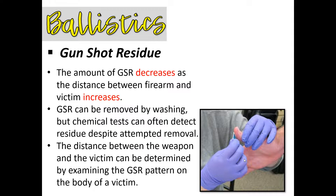GSR can be removed by washing hands, but trace amounts can still show up on a test despite removal attempts. However, it can be tricky — a good attorney could argue the person simply shook hands with someone who went hunting. GSR also creates patterns on victims when they're shot, which can help investigators determine the distance between the weapon and the victim. That's often helpful for locating where a shooter was standing and recovering cartridge casings or other evidence.